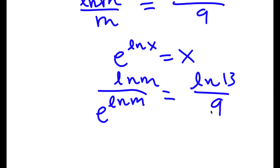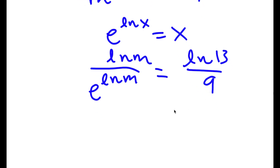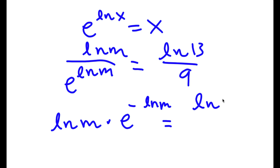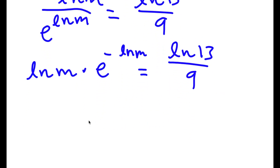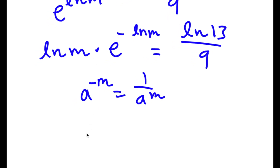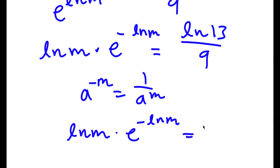Now I have ln m times e to the power of negative ln m, equal to ln 13 over 9. Because a negative exponent — if I have a to the power of negative m, this equals 1 over a to the power of m — I can rewrite this as ln m times e to the power of negative ln m is equal to ln 13 over 9.